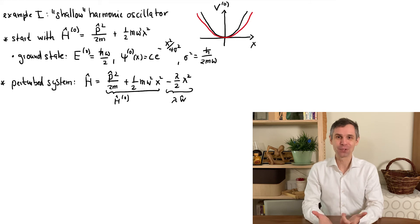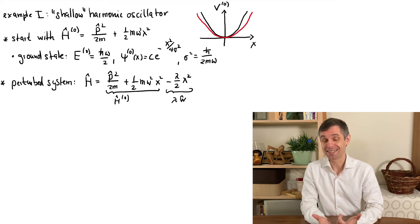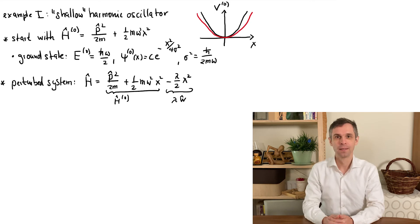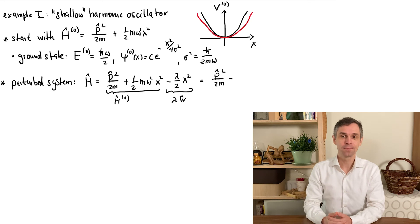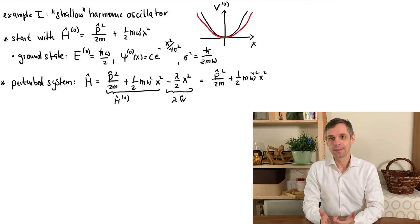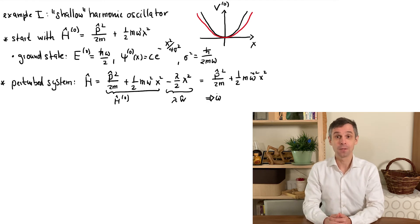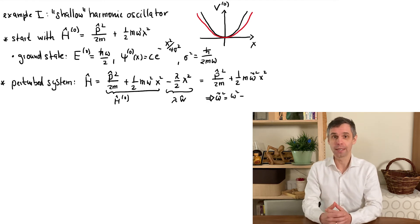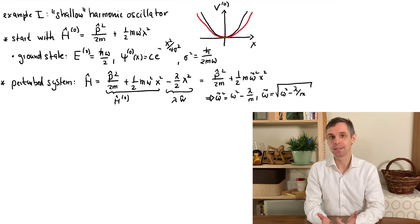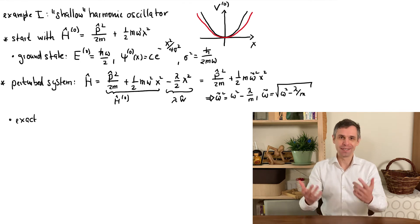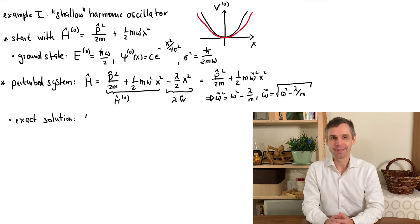As this potential remains parabolic, the system is still a harmonic oscillator, and we can therefore still solve this problem exactly. So let us first look at the exact solution. We can obtain this by rewriting the new potential energy in terms of its angular frequency, which I call omega tilde. If we compare the two expressions of the potential energy, we can read off a relation between the new and the old angular frequency. And as the angular frequency can always be taken as positive, it now becomes the square root of omega squared minus lambda divided by m.